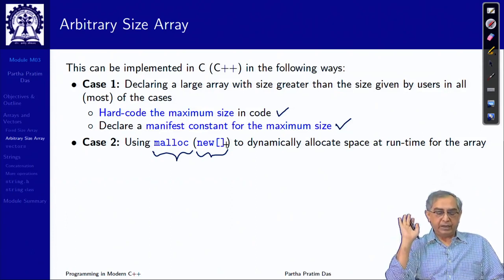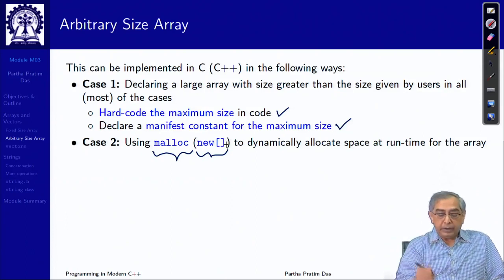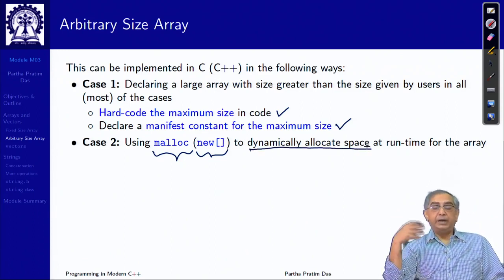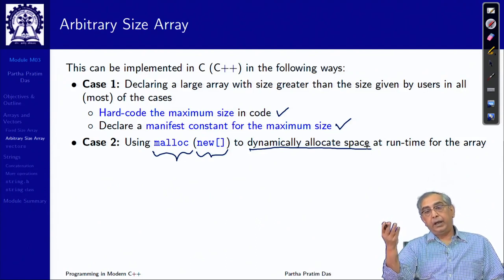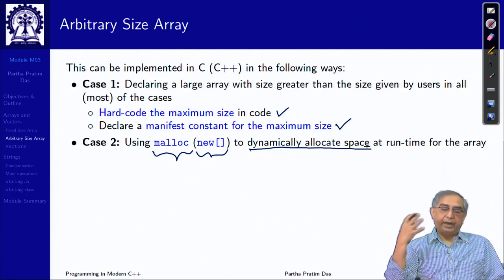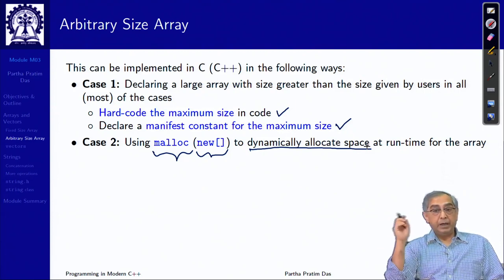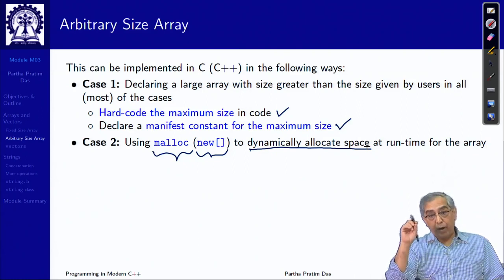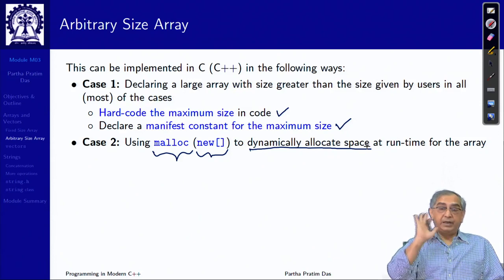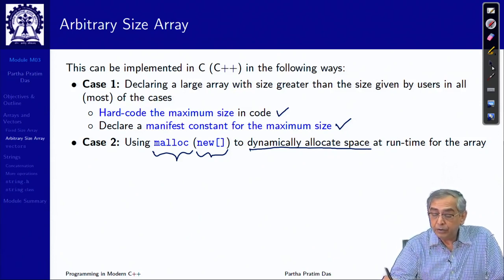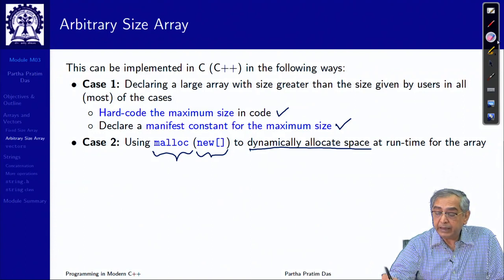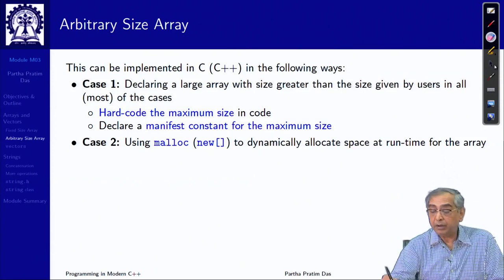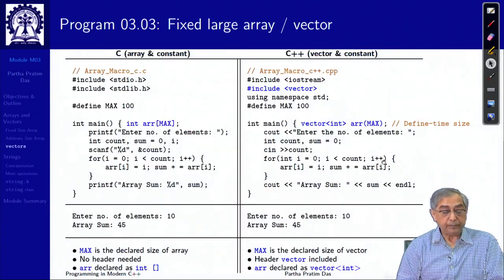There is a C equivalent of that called new, which you will learn later on. Malloc itself will also work in C++. This will help to dynamically allocate space at the runtime. But this will still not allow you to change the size once you have allocated it. Once you have allocated, it is kind of frozen.